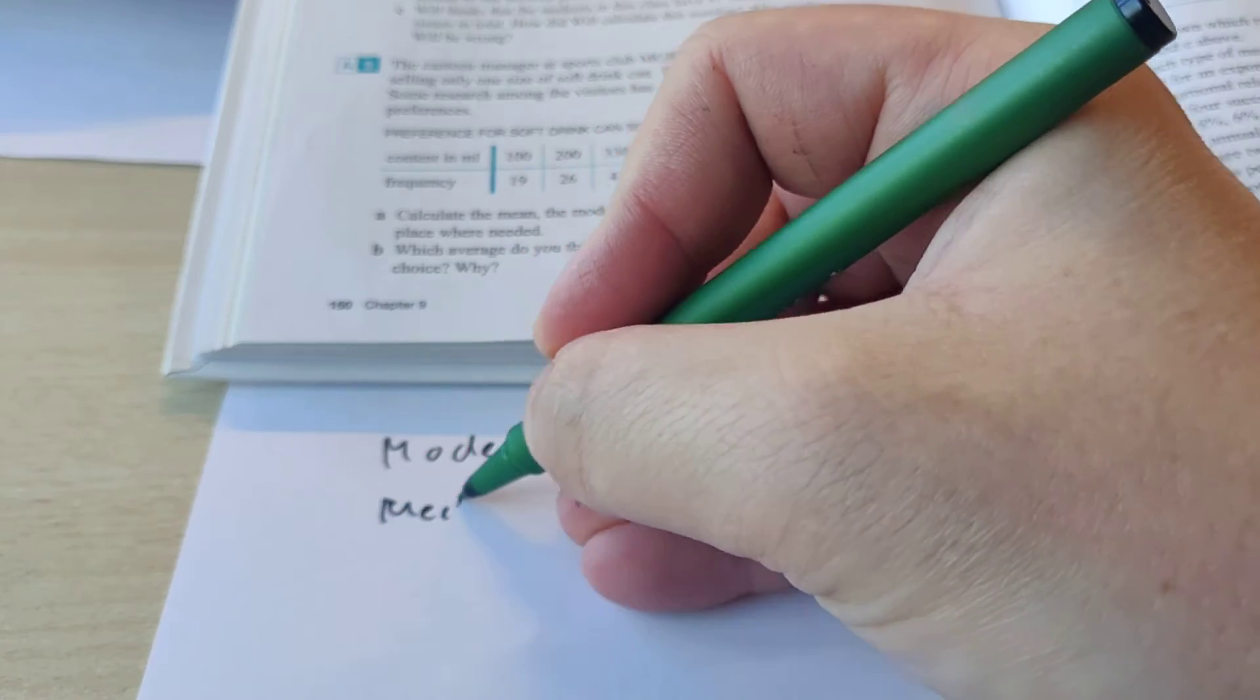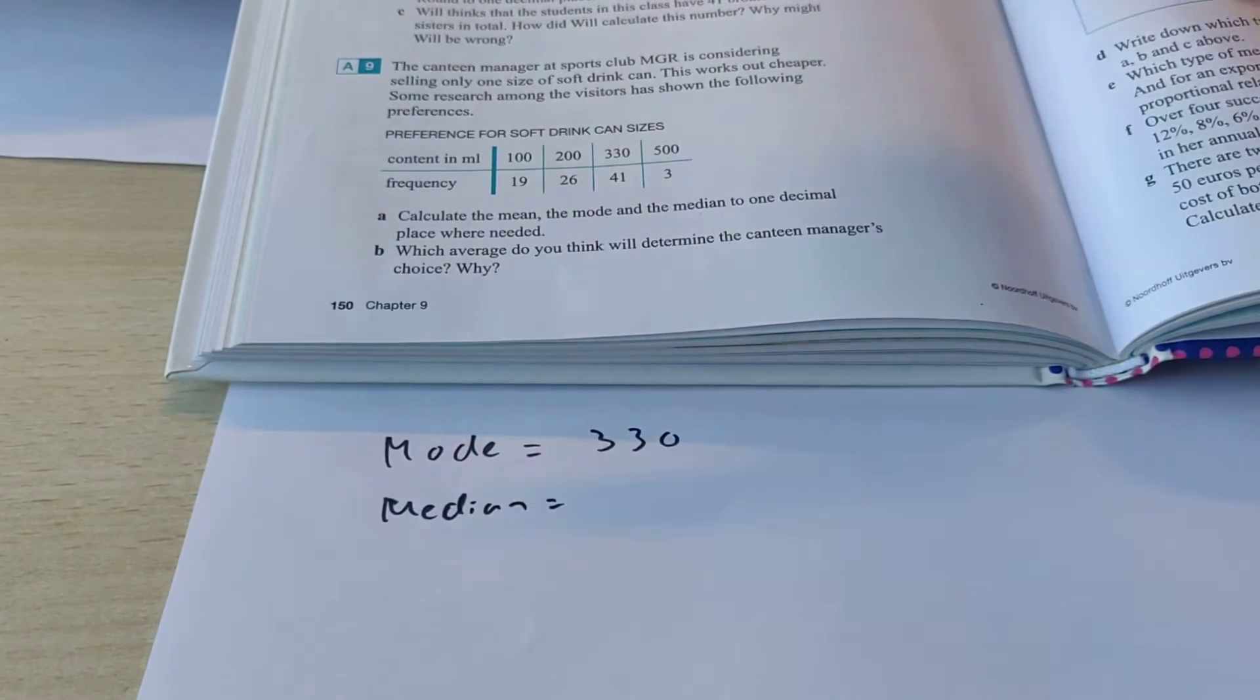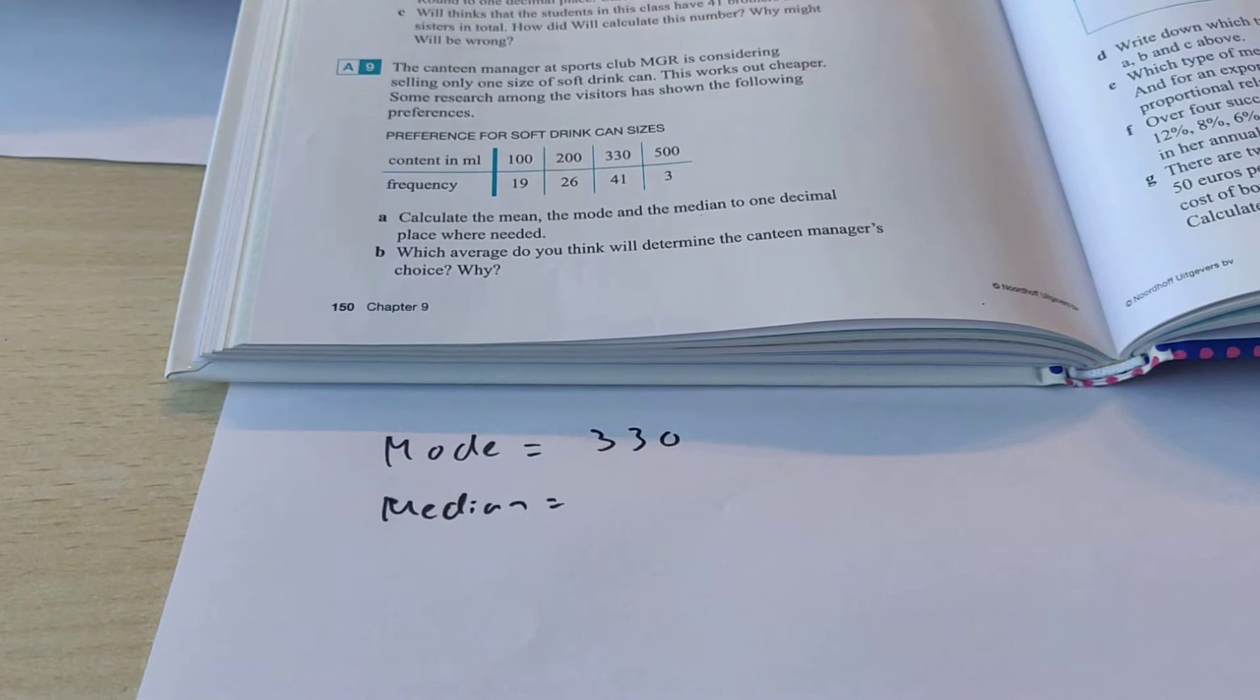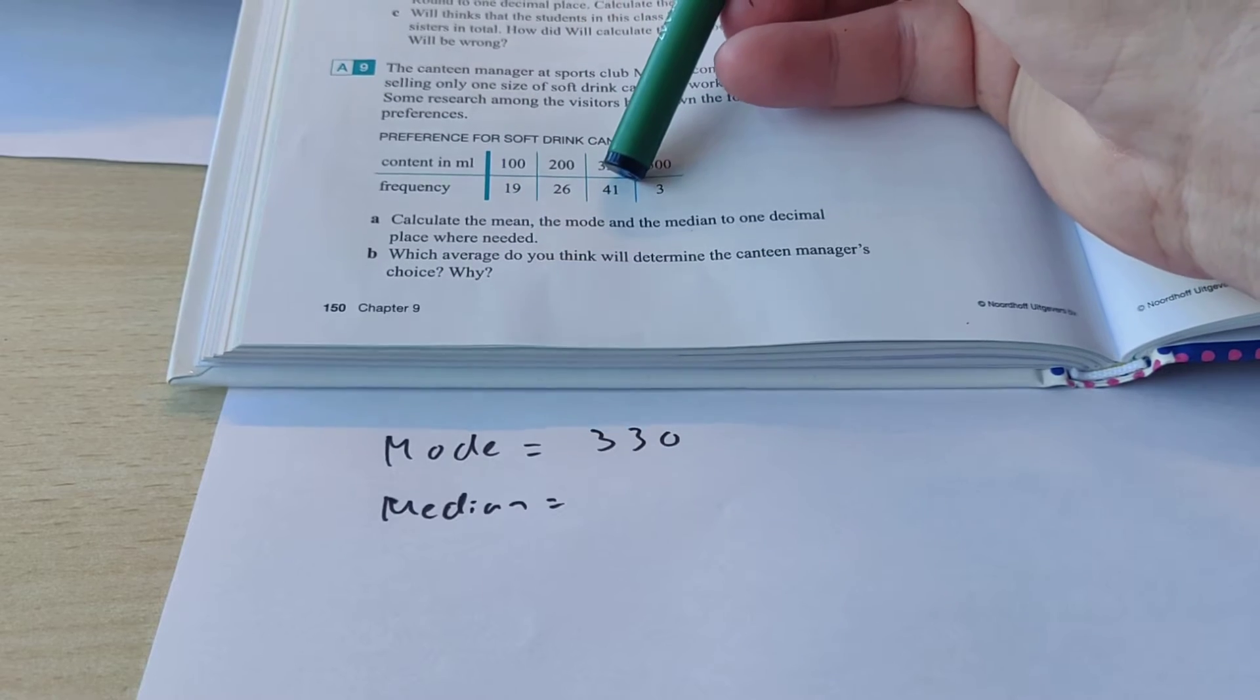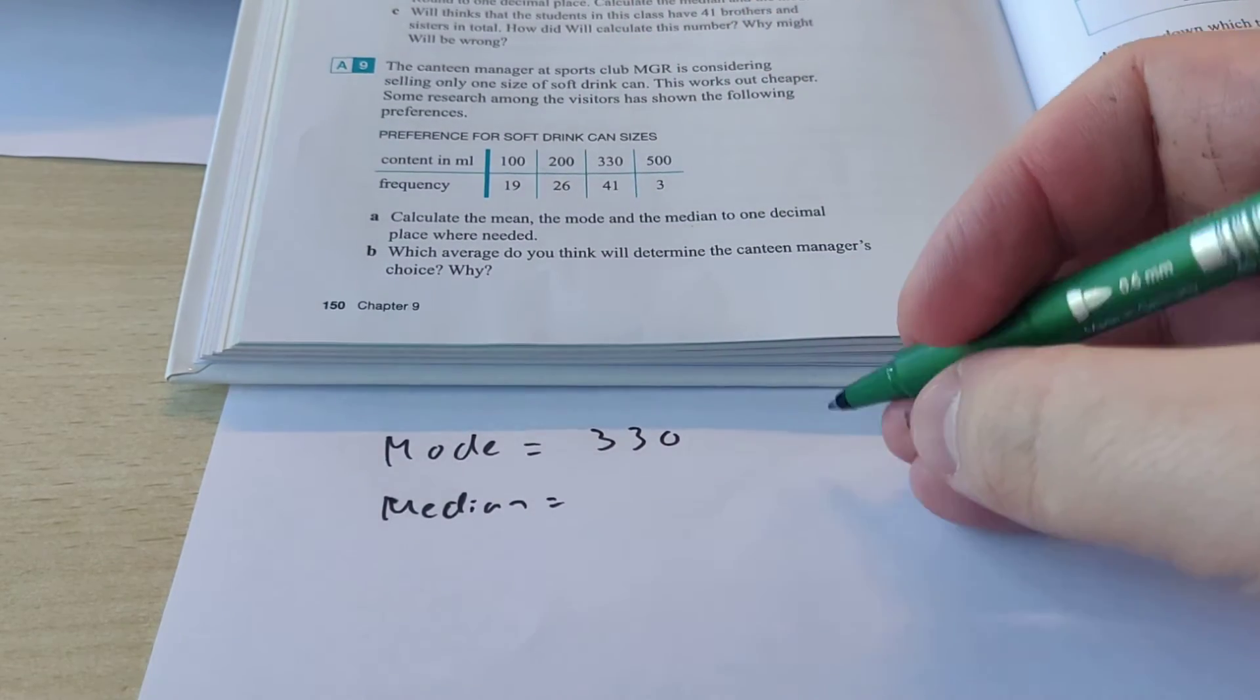Then the median is the middle number. So, we need to know what the total frequency is. So, we need to add these numbers. And then we know how many people they asked for their opinion. Alright, so, first we're going to add these two. That's 60. Then this is 86. So, it's 89. 89 people.